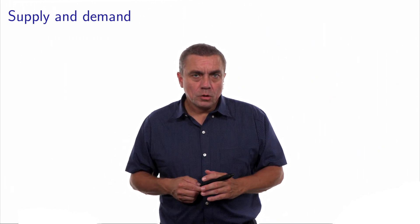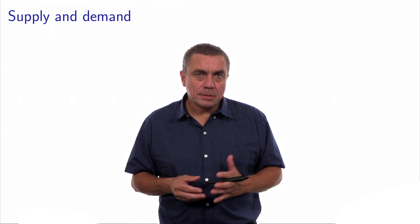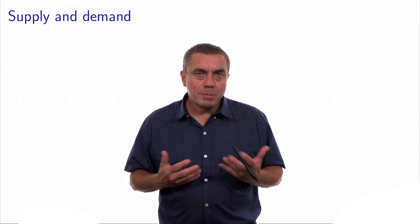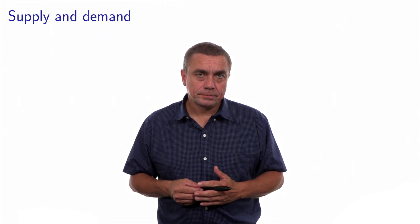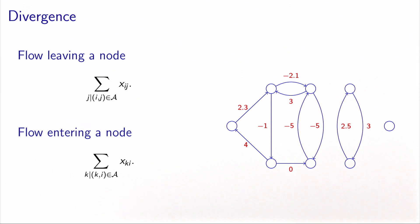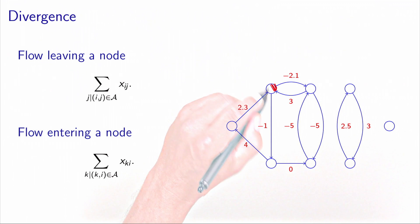In this video, we define this concept in our mathematical formalism. Let's consider the network here on the right, and let's look at what happens at a given node. So let's consider, for example, this node here.